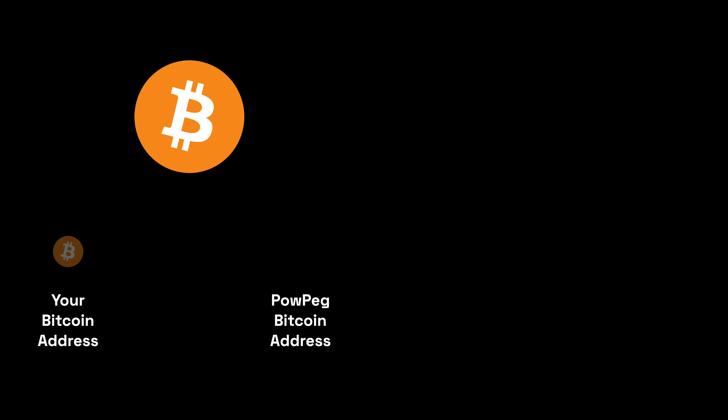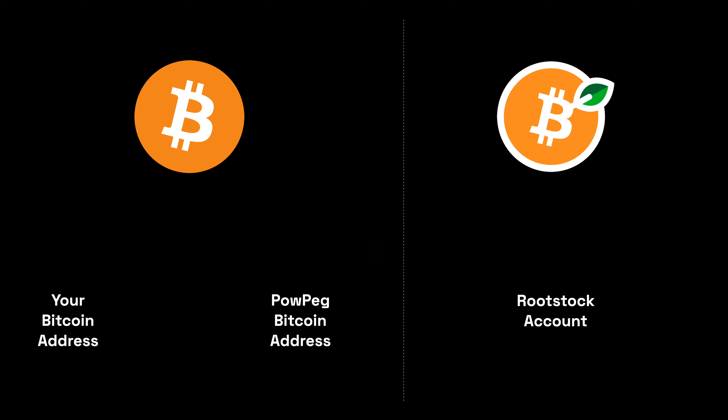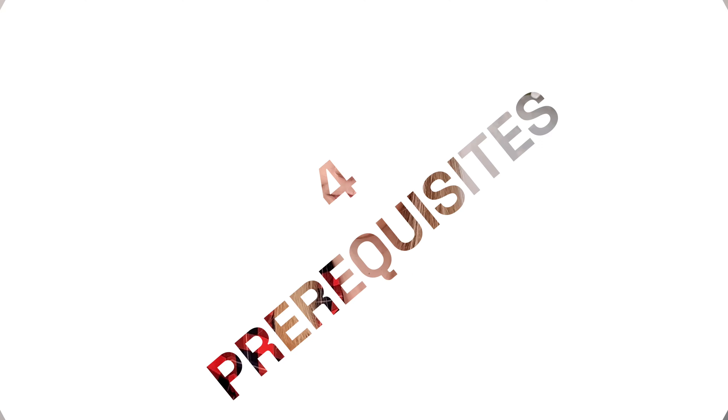At a high level, the peg-in process is going to look like this. You're going to start with Bitcoin on the Bitcoin network and send your Bitcoin to a Powpeg Bitcoin address. Then that RBTC will be sent to your Rootstock account. Once you have your RBTC, you're able to transact on the Rootstock network with lower fees and interact with Rootstock's DeFi on the Bitcoin ecosystem.